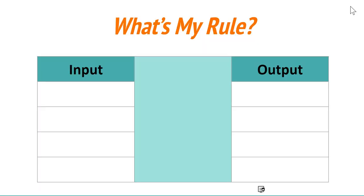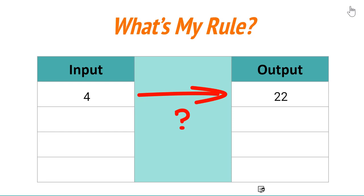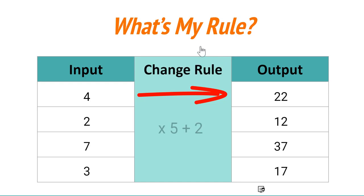We're now going to return to What's My Rule with input and output, with a more complex change rule. If the input is 4, our output is 22. Input is 2, output is 12. Input of 7, output 37. Input of 3, output of 17. What do you think the change rule is? Multiply by 5, add 2.